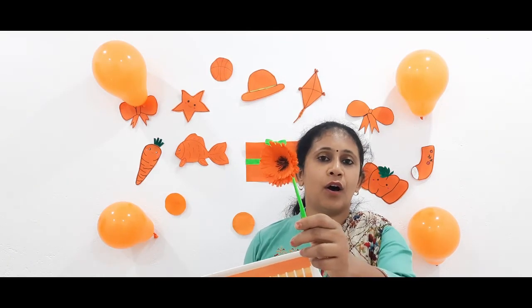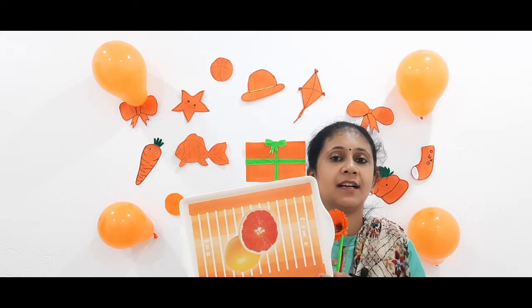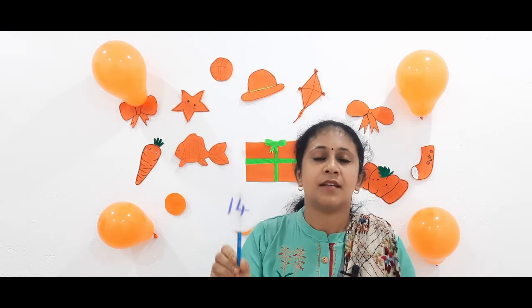So children, today we have learned about orange color, the rectangle shape, and the numbers 13 and 14. Please practice the numbers in your square line notebook. That's all for today. See you. Bye-bye. Take care.